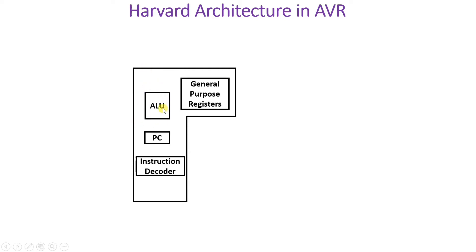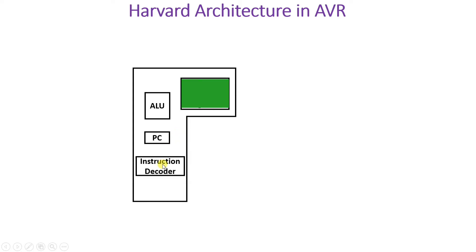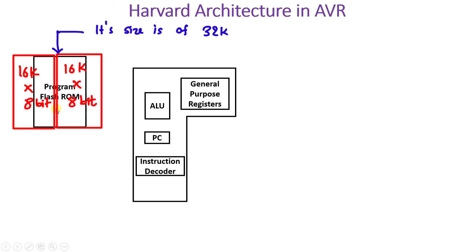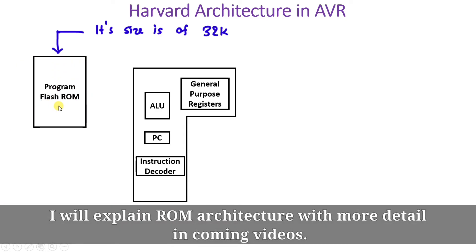Inside the CPU, there is an arithmetic logic unit (ALU) for arithmetic tasks, a program counter to store the next instruction address, an instruction decoder to decode instructions, and many general purpose registers. The program flash ROM in AVR Harvard architecture has a size of 32k — organized as 16k×1 and 16k×1 in parallel, giving 16k×2.